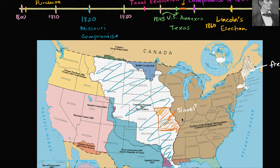The North didn't like it on moral grounds if it was a slave state, and they also didn't like it on economic grounds because it's hard to compete economically with slavery. Meanwhile, the South was afraid of losing its political power if more free states were to join the Union. In the Compromise of 1820, Missouri becomes a slave state and Maine gets carved out of Massachusetts to become a free state. But that didn't solve the problem.